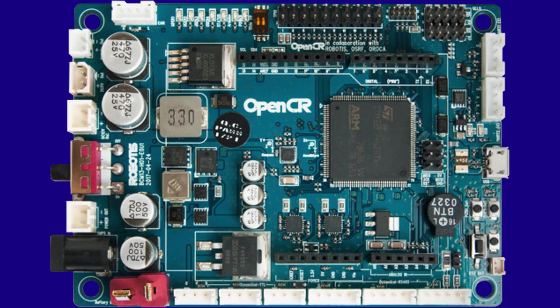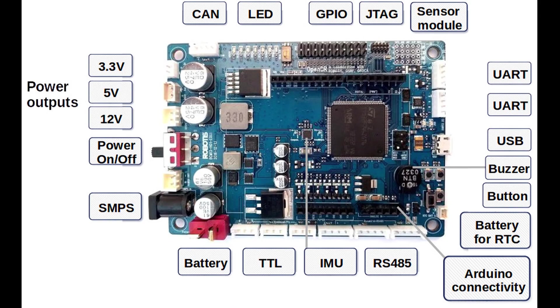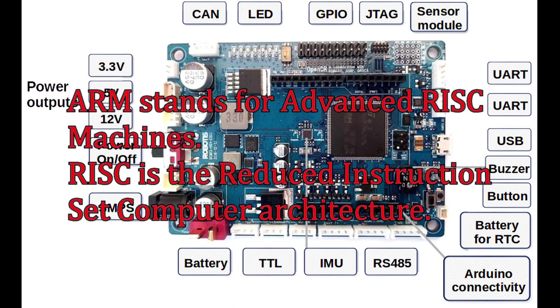It also includes an OpenCR, which was developed specifically for ROS-embedded systems, and has a Cortex-M7 core, a 32-bit ARM processor.